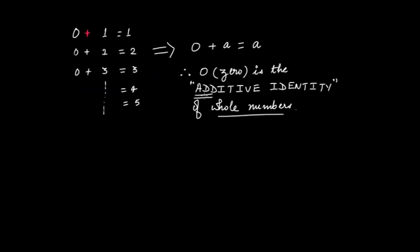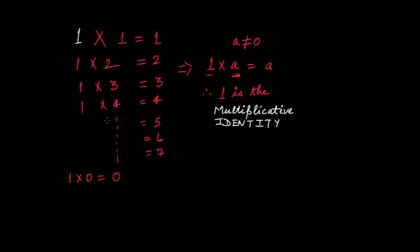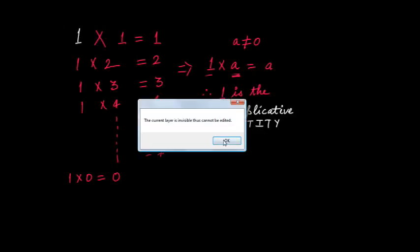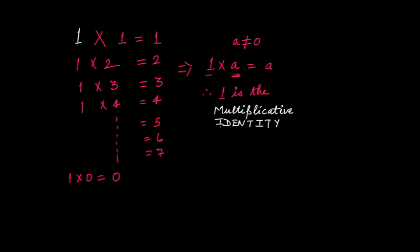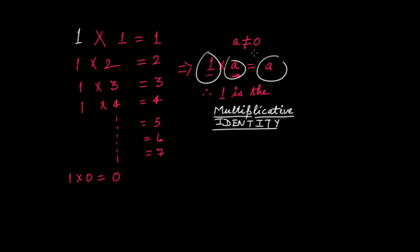So zero was the additive identity and one is the multiplicative identity. The reason one is the multiplicative identity is that if you multiply one with any number, you get back that number only. So here we learned two concepts: multiplicative identity and additive identity.